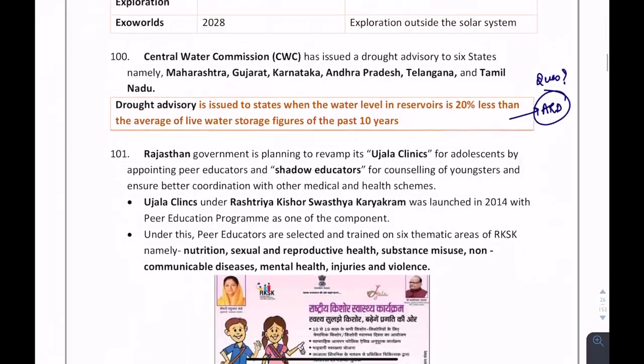For the ARD section: a DOT advisory is issued to states when the water level in reservoirs is 20% less than the average live water storage figures of the past 10 years. Remember the number 20% regarding DOT advisory.